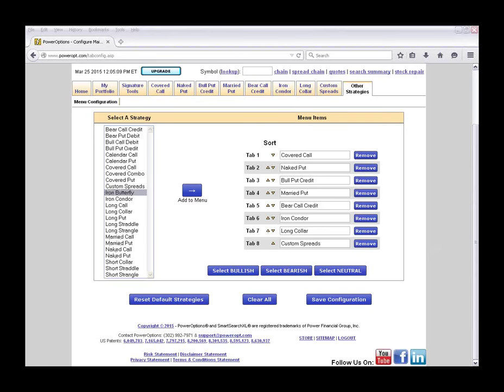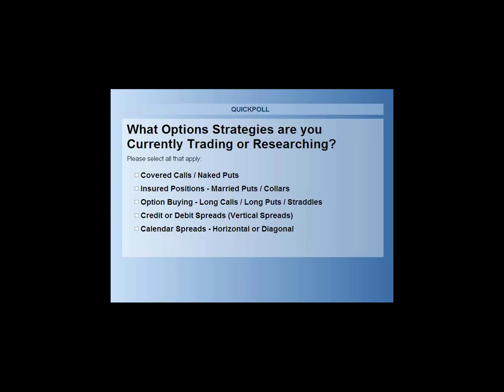Before we go further, I want to launch two quick polls to gear the rest of the presentation. The first poll asks: what kind of option strategies are you currently researching or trading? Are you mainly looking at covered calls or naked puts, insured positions such as married puts or collar trades, buying options, credit or debit spreads, or calendar spreads and time spreads? We'll leave this poll open for about a minute.